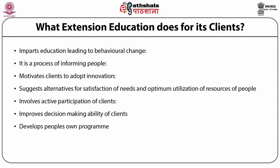The eighth element is that extension creates a congenial learning situation. A learning situation consists of learner, teacher, subject matter, physical facilities, and teaching materials. Mere existence of all these elements is not sufficient — there should be a dynamic two-way relationship between all elements of the learning situation. If there is any dilution in any one element, its results are visible in the output. Extension education understands the importance of learning situation and hence takes care of these issues meticulously.